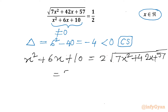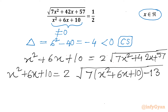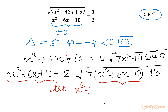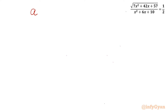Now I will write our RHS as 2 times square root of — I will take 7 common, then it will become x² + 6x + 10. That gives 70, and I need to reach 57, so minus 13. The left hand side is x² + 6x + 10. I can see a straight substitution: let x² + 6x + 10 = a. So our equation becomes a = 2 times square root of (7a - 13).